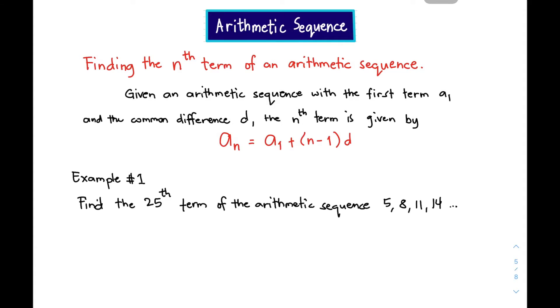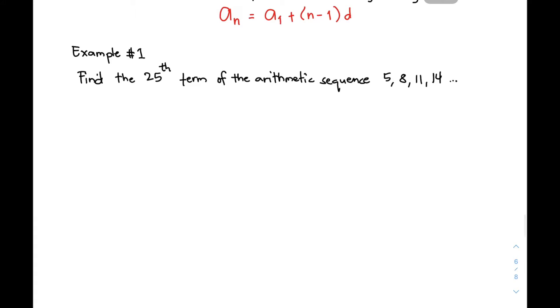Our target here is to find the indicated or the missing term which is given in each example below. So we have here the first example. Find the 25th term of the arithmetic sequence 5, 8, 11, and 14. For us to find the 25th term of the given sequence, we will be using the formula aₙ = a₁ + (n-1)d. Before you proceed and before you find the 25th term of the given arithmetic sequence, you need to identify first the value of your a₁. This is your first term.